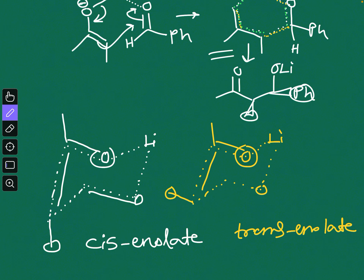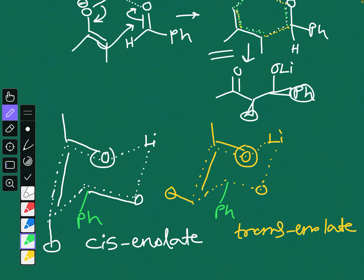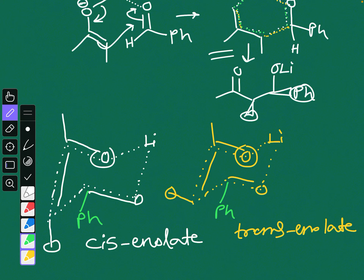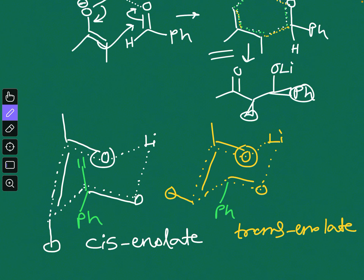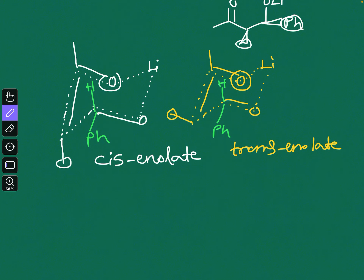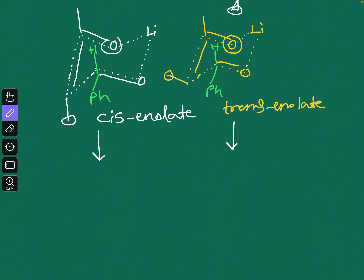The next step is to choose whether you put the phenyl group axial or equatorial. Since the axial position is sterically hindered, by default you put the phenyl group equatorial in both cases — it doesn't matter whether you are using the cis or trans enolate. The phenyl position is determined independently: in both cases, hydrogen will be in the axial position and phenyl in the equatorial position.